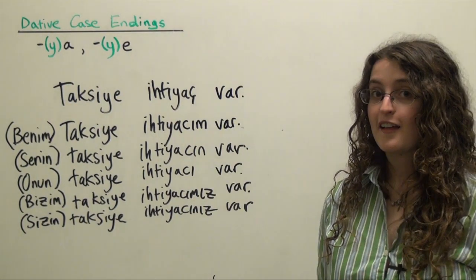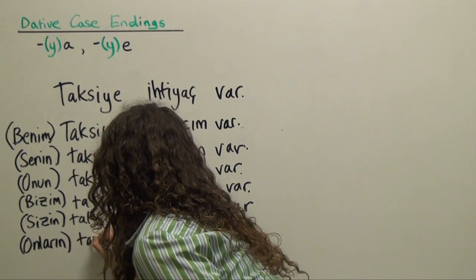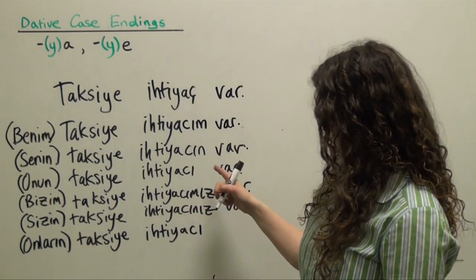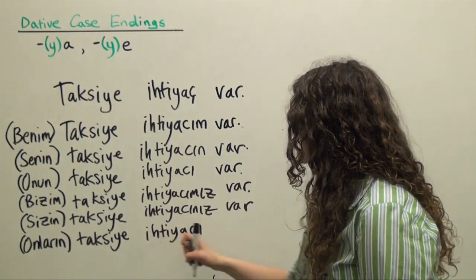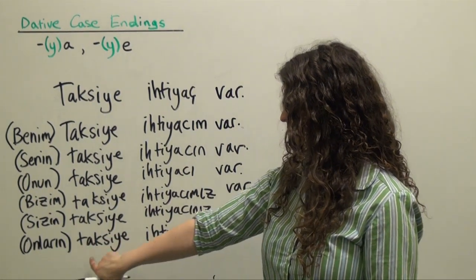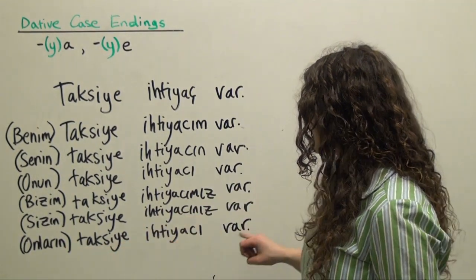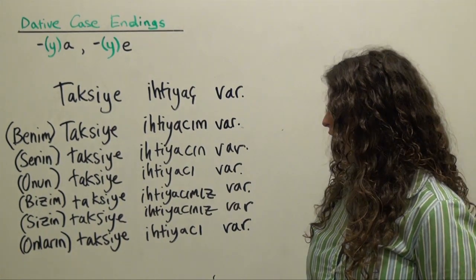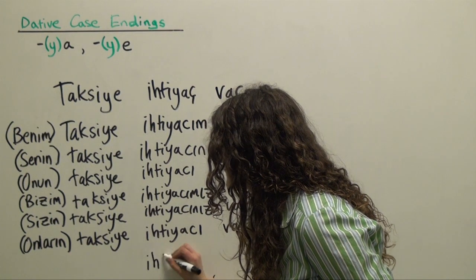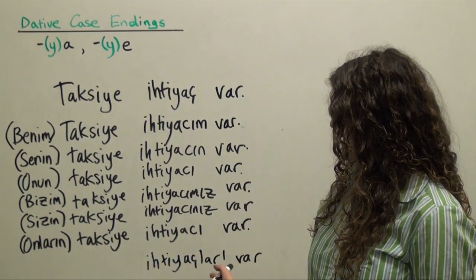Finally, the third person plural. Optionally 'onların.' 'Taksiye ihtiyacı var' — just like with the third person singular. 'Onların taksiye ihtiyacı var' — their need for a taxi exists. And similarly, if they don't need a taxi: 'Onların taksiye ihtiyacı yok.' We also have the option of saying 'Onların taksiye ihtiyaçları var' with the same meaning — they have need for a taxi.